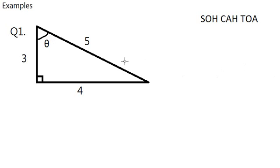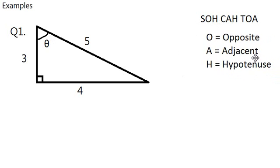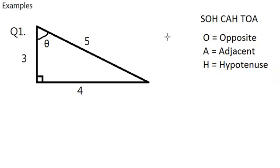So we know that we have to know the three letters O, H and A means. So these are what they mean, O is opposite, A is adjacent, H is hypotenuse, the longest side or the one opposite the right angle.